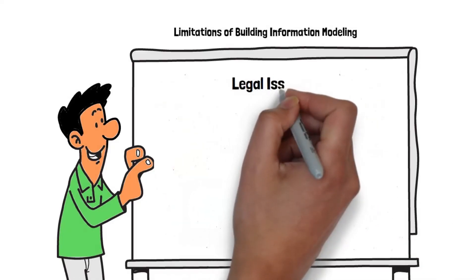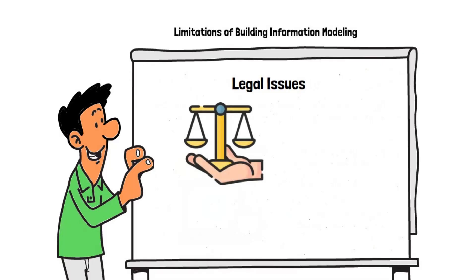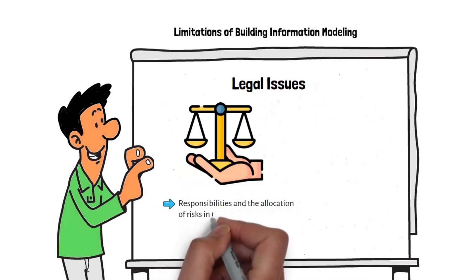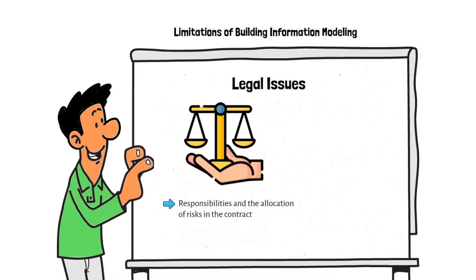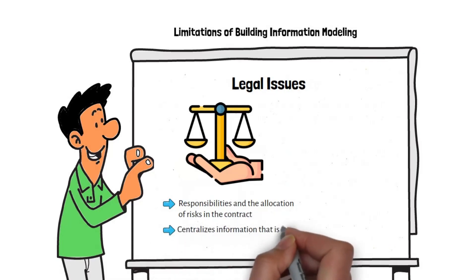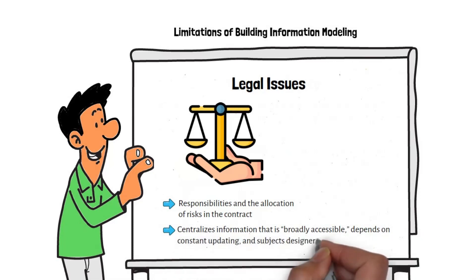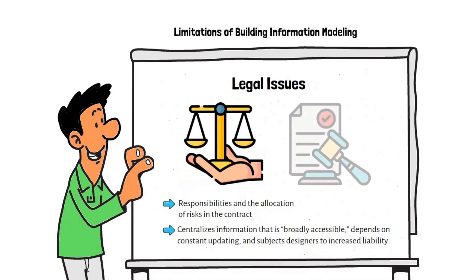Legal Issues: Legal issues represent one of the biggest challenges of BIM. A significant challenge is the definition of responsibilities and the allocation of risks in the contract. BIM implementation centralizes information that is broadly accessible, depends on constant updating, and subjects designers to increased liability. One of the biggest concerns that contractors and owners have about using BIM is that the legal framework is too unsettled.